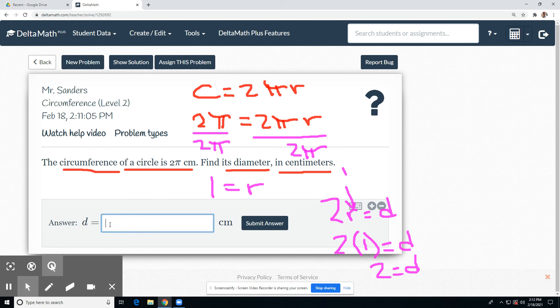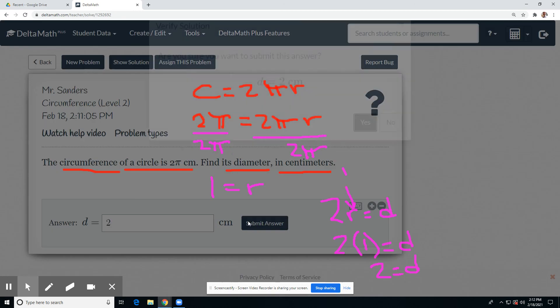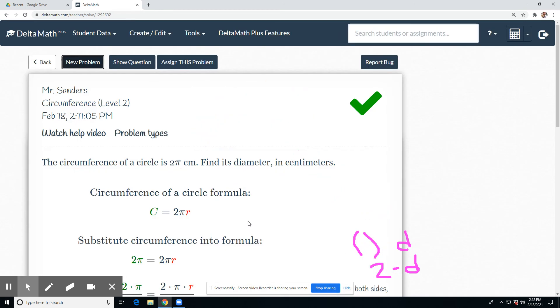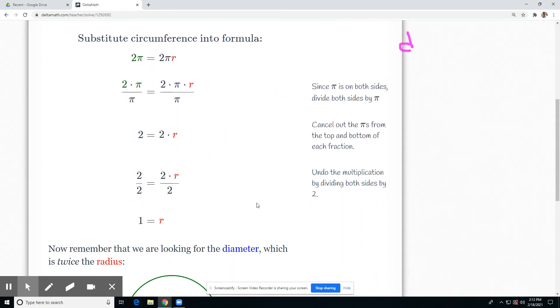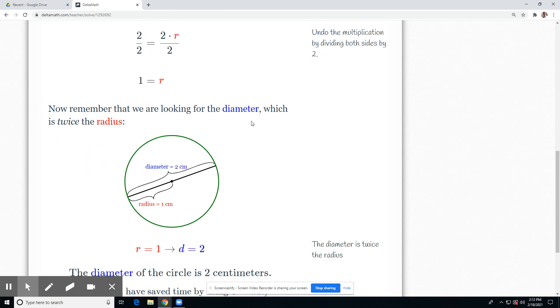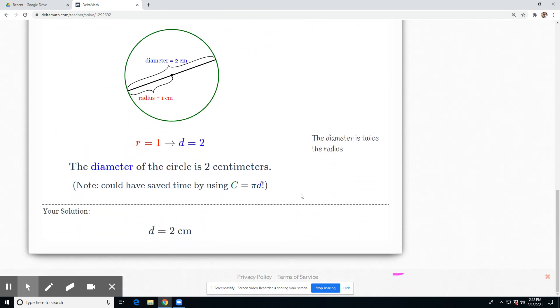So diameter is 2. And we're not worried about units, they're taking care of that for us. And the rest of the problems should be similar. As always, look through their explanation. Let me know if you have any questions.